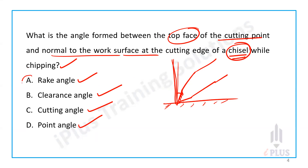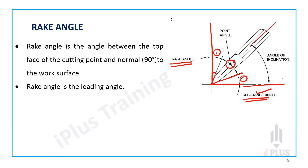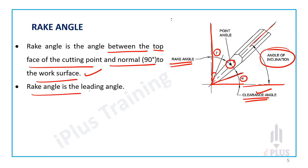The answer is option A, rake angle. The rake angle is the angle between the top face of the cutting point and the normal — 90 degrees — to the work surface. The cutting edge makes this angle with the surface, represented as gamma. Alpha is the clearance angle, and there is also the point angle and inclination angle. The rake angle is the leading angle.